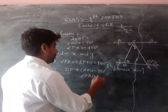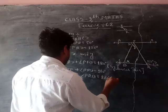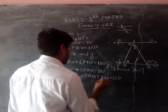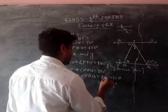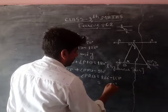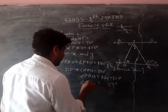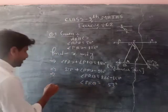Then we get PRQ equal to 180 minus 127 degrees. 7 minus 2, 5. Angle PRQ. Now see.